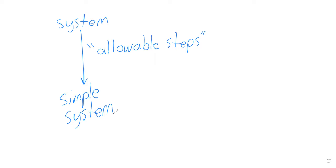Systems of linear equations are fundamentally complicated beasts. They've got a bunch of variables, a bunch of addition and subtraction, and equalities. They can be true or false depending on what values you plug into the variables.